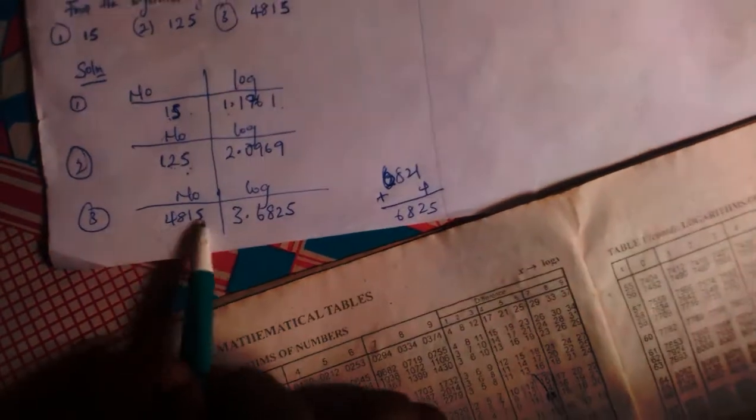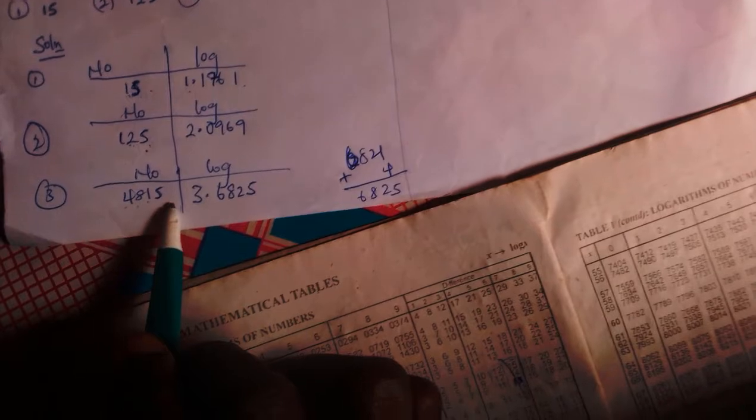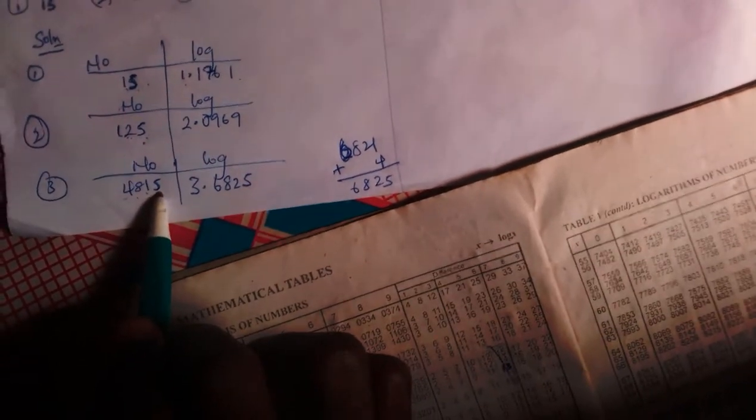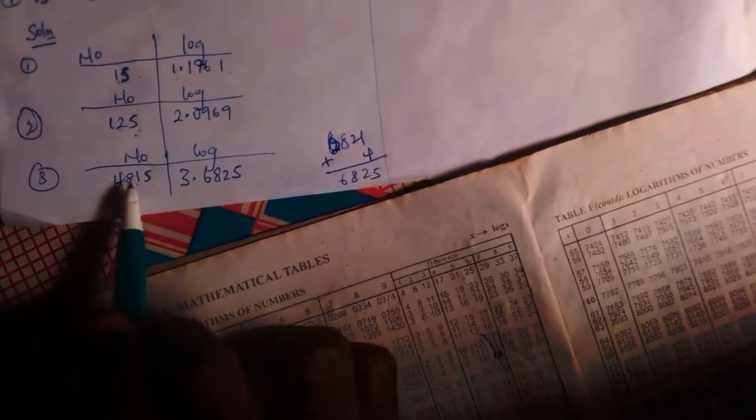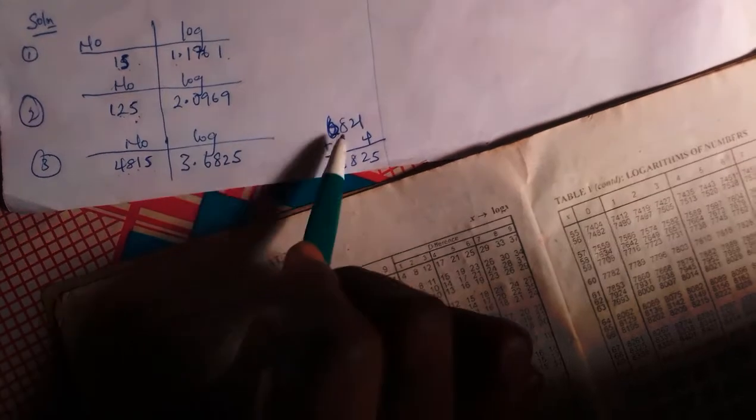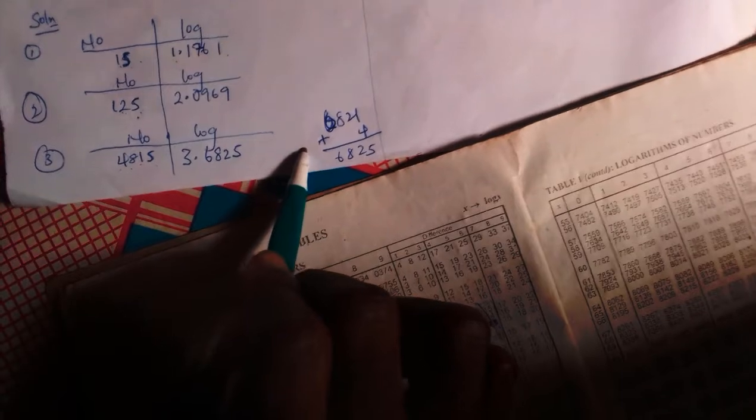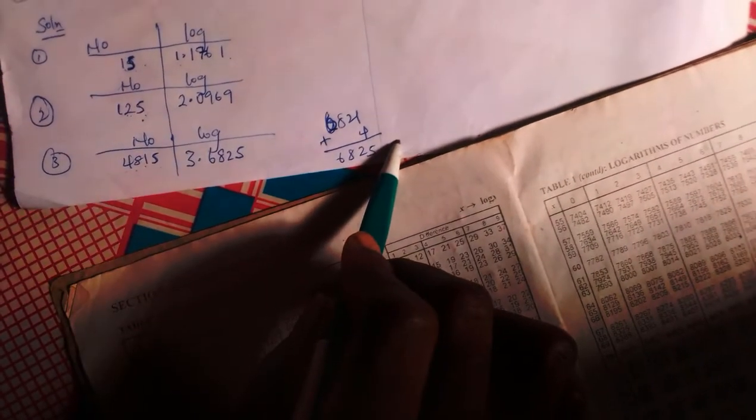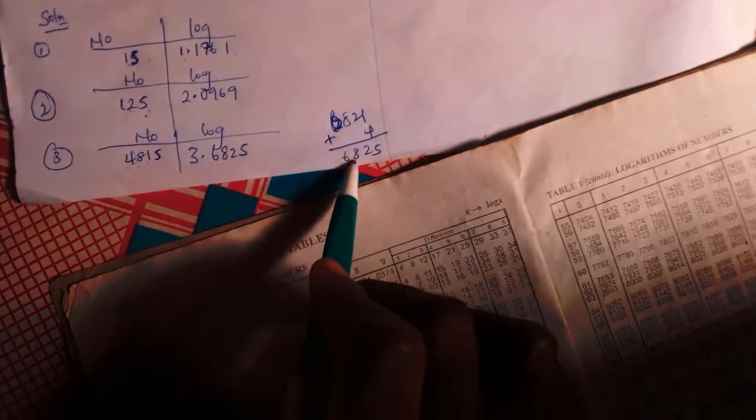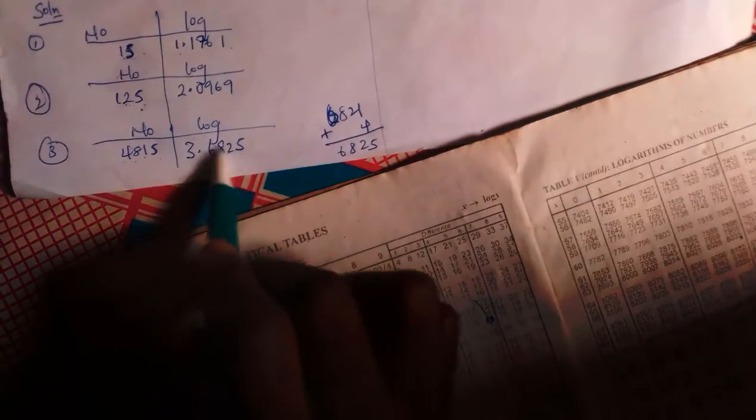So let me come again with this one. This means I'll first look for my characteristic, which is 3 points. How do I get 3 points? Count these numbers, that's 4 minus 1, that's 3 points. How do I check this? 48 under 1, which is 6821. Difference 5, trace it from 48 under 1 to the difference table. 48 under 1 difference 5 was 4. On adding them we got 6825. And that's how we got 3.6825.